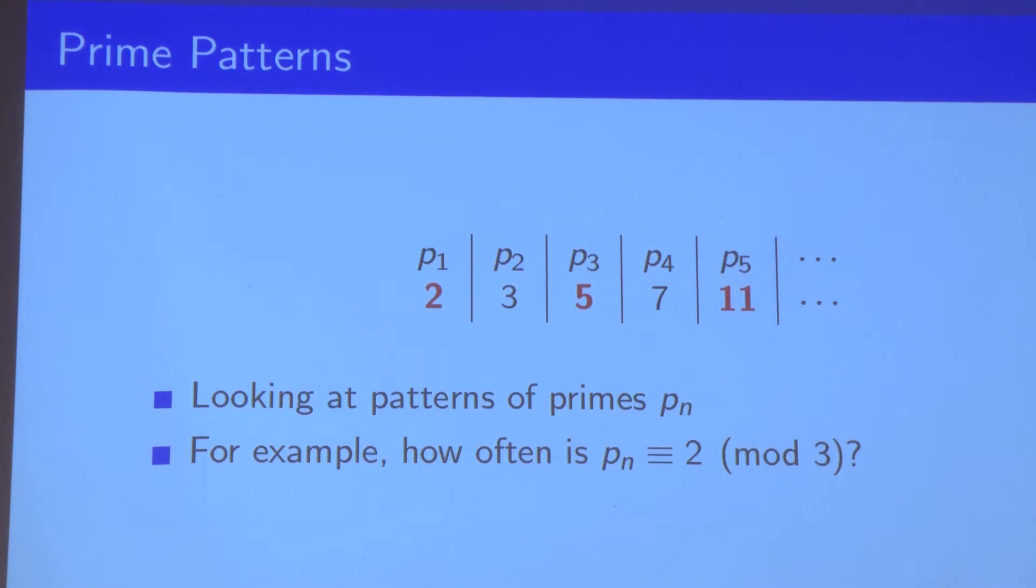It turns out that this intuition is actually true by a theorem called Dirichlet's theorem. That says if you're given an integer Q and you look at all the possible remainders when primes are divided by the integer, the primes are roughly equally distributed among those remainders.